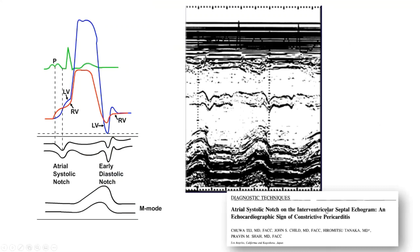This M-mode sign for constrictive pericarditis has been known since the 1980s. The early diastolic notch is thought to occur because the left ventricle — by reason of its geometry — is better able to generate diastolic suction than the right ventricle, creating a transeptal pressure gradient that favors leftward motion of the interventricular septum. The notch associated with the atrial kick has been described as follows: with constriction and atrial kick, the posterior wall cannot give, so the septum oscillates.